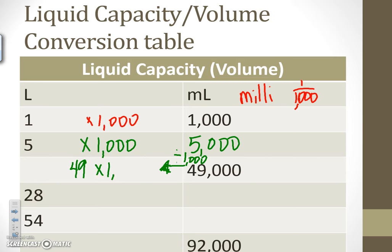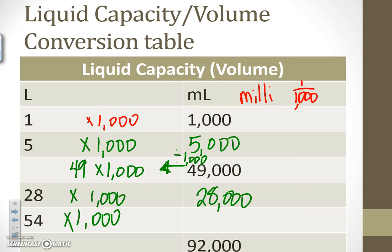Going the opposite direction, remember the inverse of multiplication is division, so we divide by 1,000. For example, 49,000 milliliters divided by 1,000 is 49 liters — and we can check: 49 times 1,000 equals 49,000. Similarly, 28 times 1,000 is 28,000 milliliters, and 54 times 1,000 is 54,000 milliliters. Working backwards, how many liters is 92,000 milliliters? Dividing by 1,000 gives 92 liters, and we check: 92 times 1,000 equals 92,000. So 92 liters is equivalent to 92,000 milliliters.